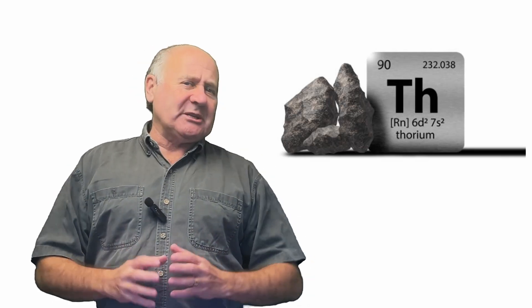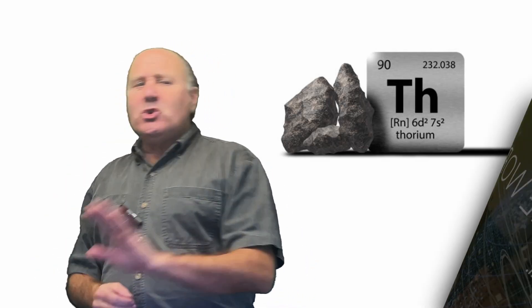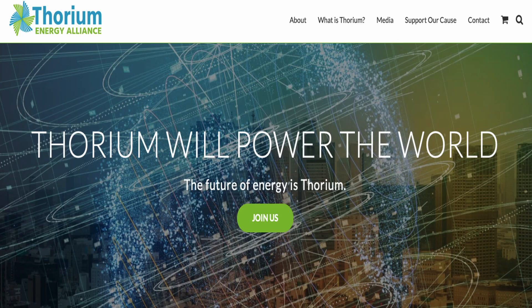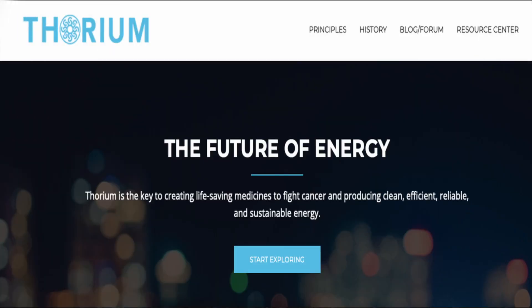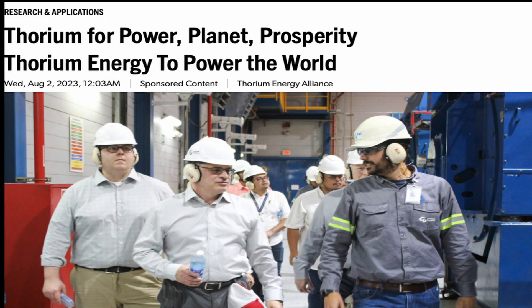Thorium. There's so much excitement around thorium. It's the nuclear panacea. Every problem with nuclear power, from waste to proliferation to cost, can be solved by taking the uranium out of nuclear power and replacing it with thorium.